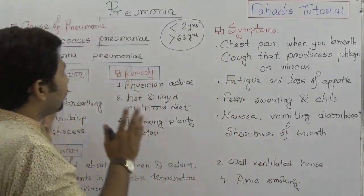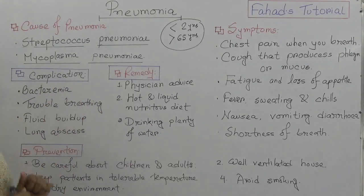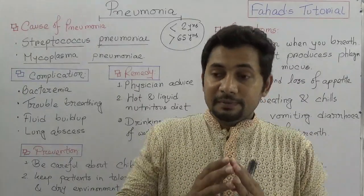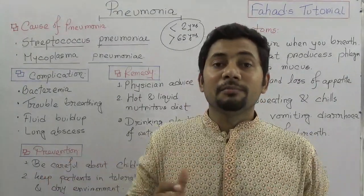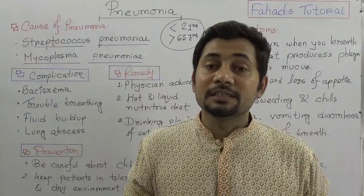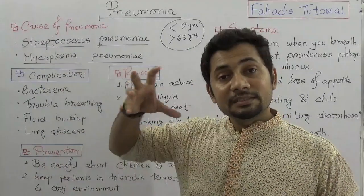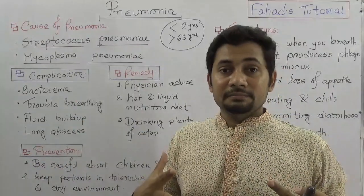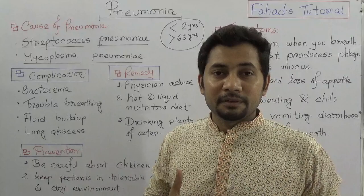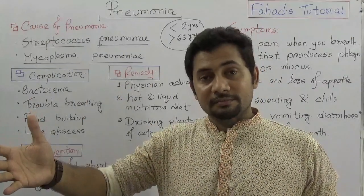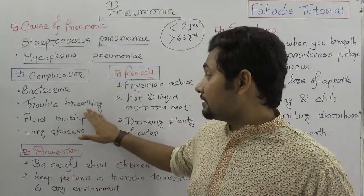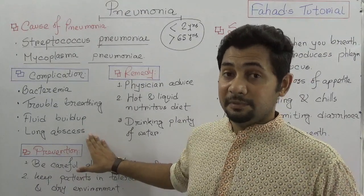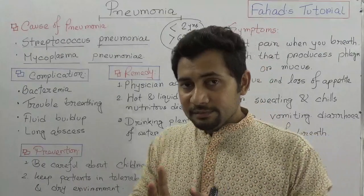What are the complications? If it is bacterial pneumonia, the bacteria can spread through the whole body — this condition is known as bacteremia, meaning the presence of bacteria in the blood. Trouble breathing is another complication in longer-term cases, and lung abscess is also a complication of pneumonia.